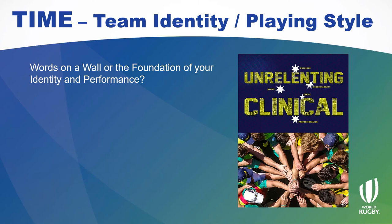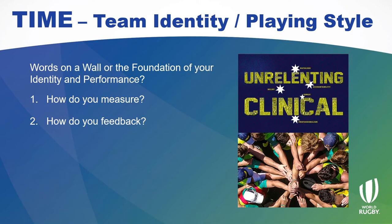This is the one that played a key role for us as we moved along. When we look at ourselves, what are we actually collecting and measuring on? If you have a team identity or team culture, are they just words on a wall, or are they the foundation of your identity and performance? Is it coach-driven or are the players truly bought in? How do you measure it and how do you feed back on it? Our example with the Aussie Sevens — we had three key words: unrelenting, clinical, and united. All of our review was then focused on these three words.